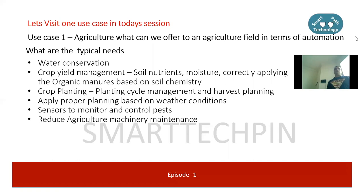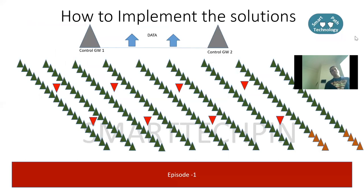Monitor and control pests - another critical area requiring monitoring. Reduce agricultural machinery maintenance to lower costs on expensive equipment. These are some hand-picked common problems you find in any agriculture domain.